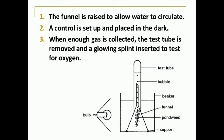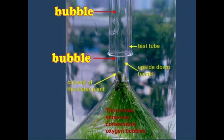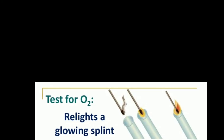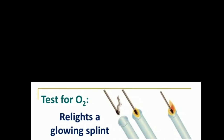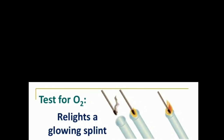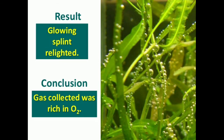Observation: Bubbles start emerging from the hydrilla plant and collect in the inverted test tube. If we remove the test tube and introduce a burning splint inside it, the splint will burn more brightly. The hydrilla plant starts photosynthesis in the presence of sunlight and releases oxygen. We can therefore conclude that oxygen is evolved during photosynthesis.